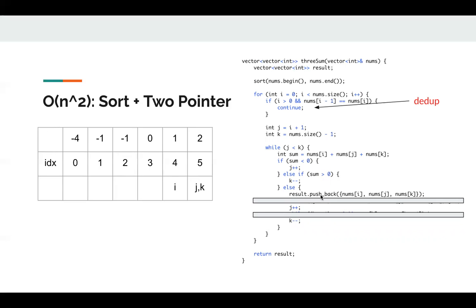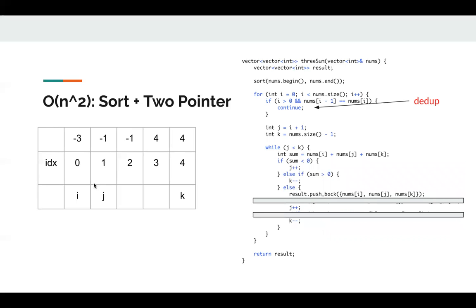Is it a valid answer? Let's think about this example. When i is zero, j is one, k is four, we know the sum of nums[i], nums[j], nums[k] is zero. So negative three, negative one, four is a valid triplet. So then we move j and k.